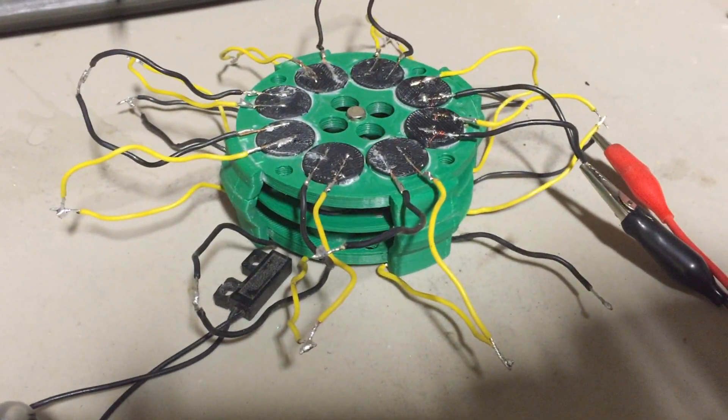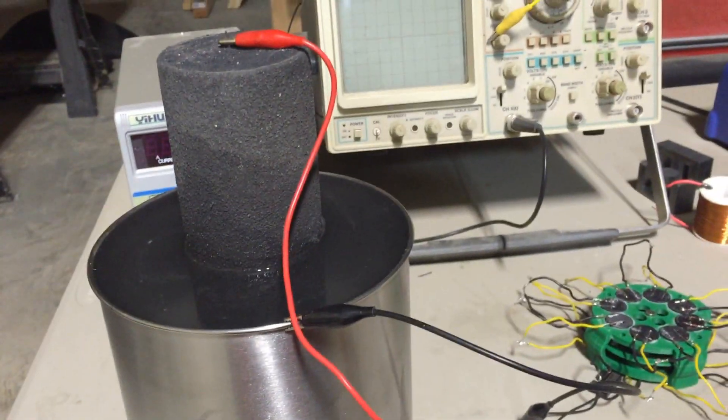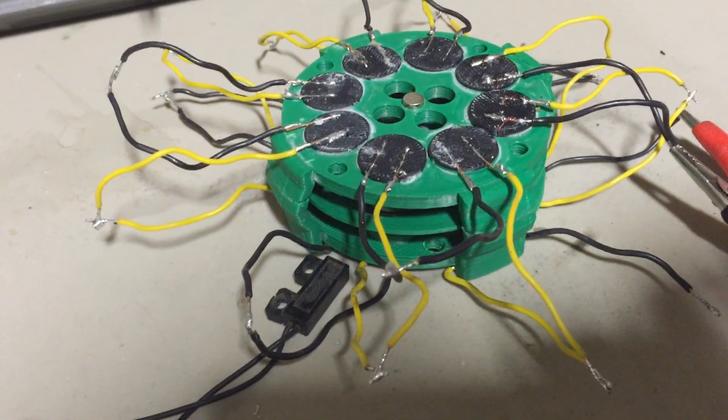This motor could run on such incredibly low voltage that I got out some galvanic charts and realized that the potential difference between graphite and stainless steel was about 100 millivolts. You can see the motor running on that.